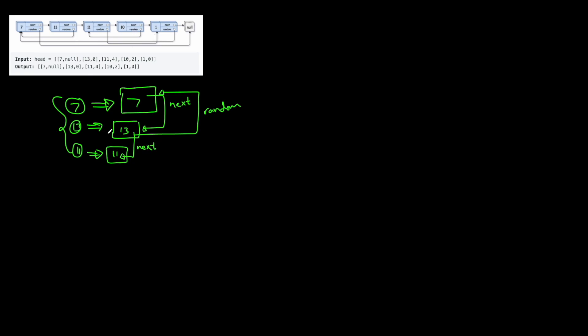What we can do then is simply return the head. We were given the head, so we look into the dictionary for the copy of whatever the head was — the seven — and return it, which will be our copied linked list. That's the algorithm we want to use to solve this problem. Let's go into the code editor and look at how we might implement this.